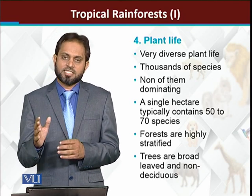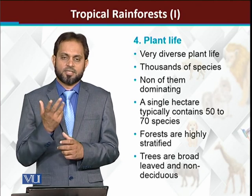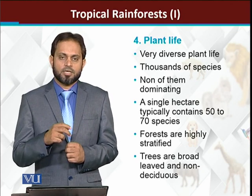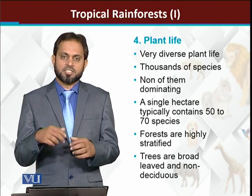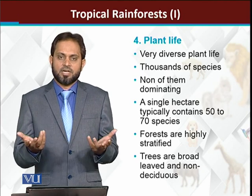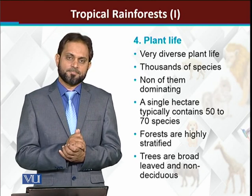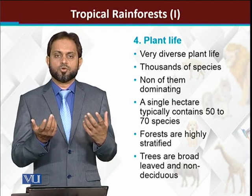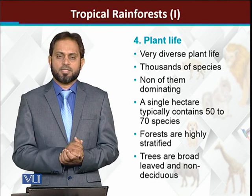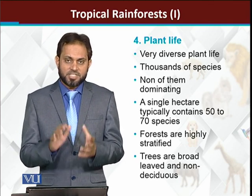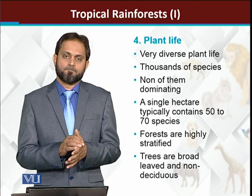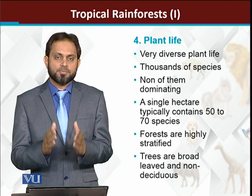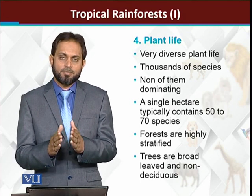In conifer forests, conifers are dominant; in grasslands, grasses are dominant; in deciduous forests, deciduous plants with broad leaves are dominant. While in tropical rainforest, all plants have an equal chance to grow, so none of them is dominating. Species richness is very high — even one hectare of land may contain 50 to 70 species of plants.